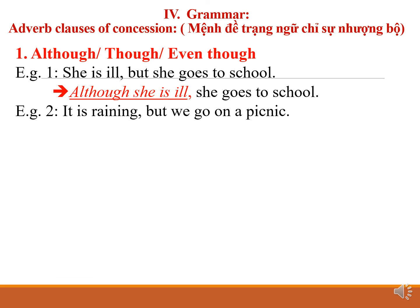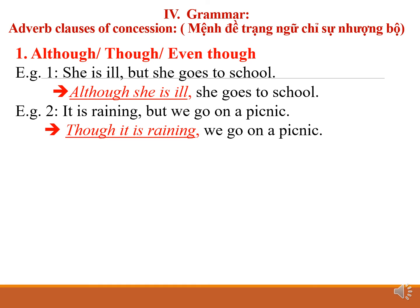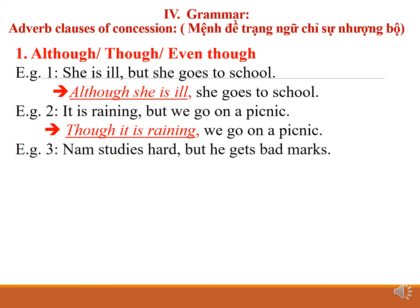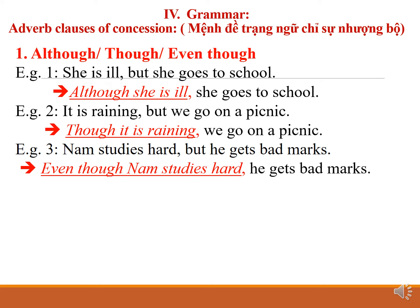Using even though: 'Nam studies hard, but he gets bad marks' becomes 'Even though Nam studies hard, he gets bad marks.' So through these three examples, you can see that although, though, or even though introduce adverbial clauses of concession.